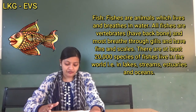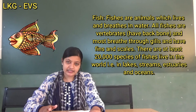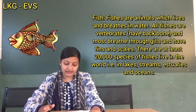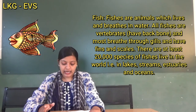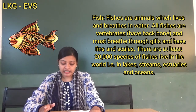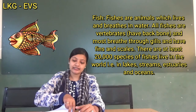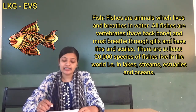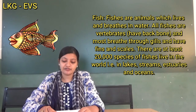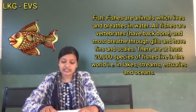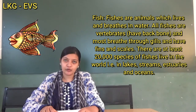Next, F-I-S-H. Fish. Fishes are animals which live and breathe in water. All fishes have backbones and most breathe through gills and have fins and scales. There are at least 20,000 species of fish living in the world, in lakes, streams, estuaries, and oceans.